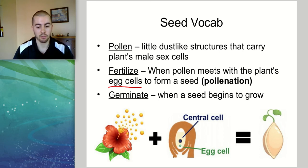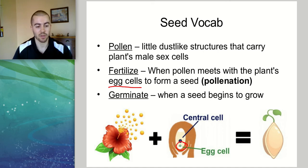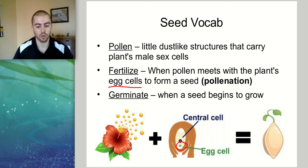This pollen basically has to come into contact with the female sex cell for the plant — the egg cell. The sperm cells in the pollen need to come into contact with the egg cell from the female part of the plant, which we'll talk about later.